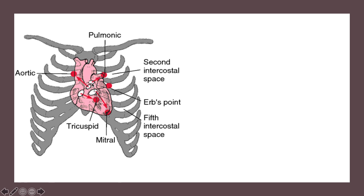The pulmonic valve corresponds to the left base point, the second point — also found in the second intercostal space but on the left-hand side, where the pulmonary valve is best heard. Then you have Erb's point, the third point, which is directly below the second point in the third intercostal space.